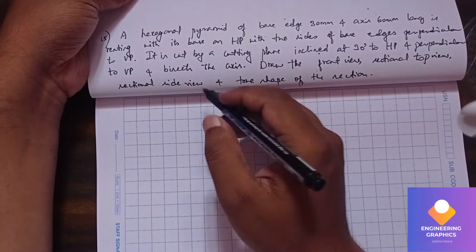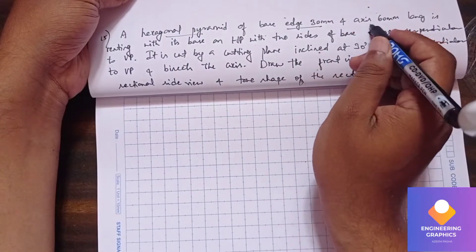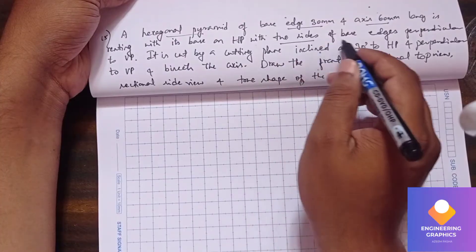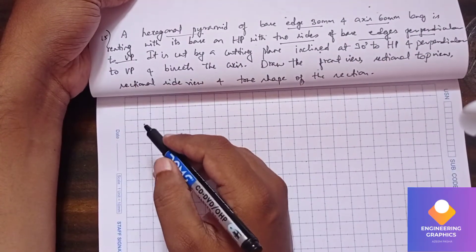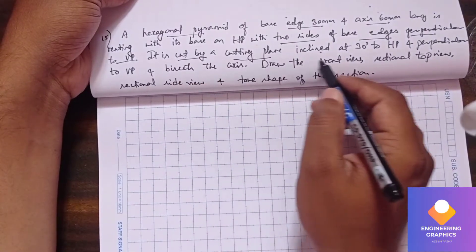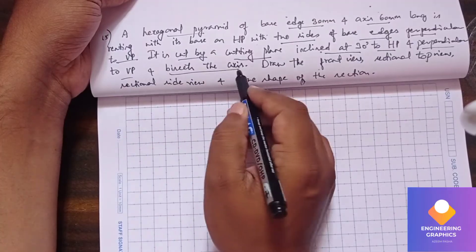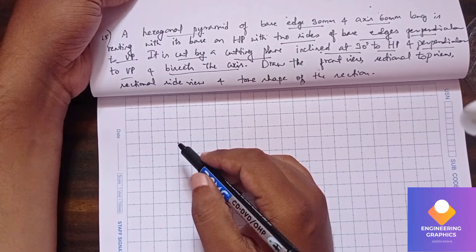Okay, here in this problem they have given a hexagonal pyramid with base edge 30mm and axis length 60mm. It rests with its base on HP with two sides of the base edges perpendicular to VP. It is cut by a cutting plane inclined at 30 degrees to HP, perpendicular to VP, which bisects the axis. So bisect the axis means it is exactly cutting at the midpoint of the axis.